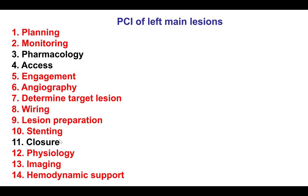These are the 14 steps of percutaneous coronary intervention, with the steps of particular importance to left main PCI being highlighted. It is important to plan the case carefully and to monitor the patient throughout the case, as left main disease can lead to hemodynamic compromise. Be careful with engagement, as this can cause pressure dampening and hemodynamic compromise.